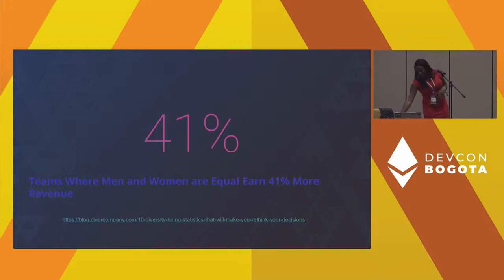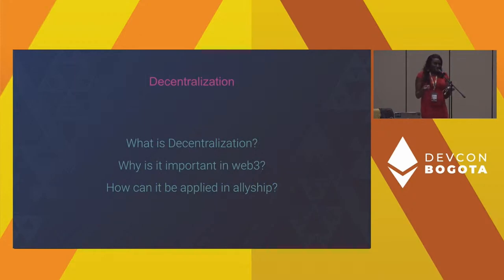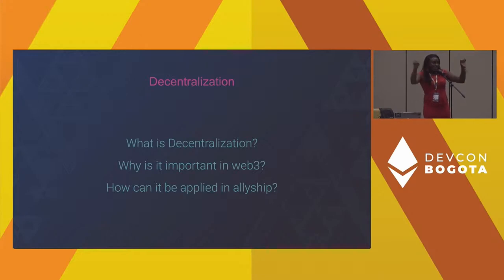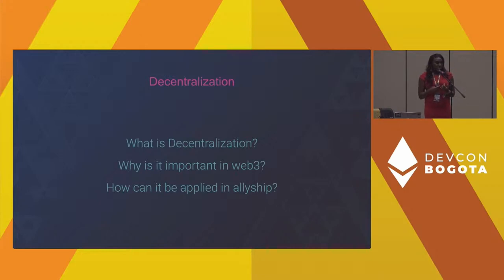The key reasons these are important to Web3 come from the actual ethos of Web3. When you think of decentralization, identity, and plurality — we always talk about these from a technical perspective, but they also apply from a human perspective. When we think of decentralization, we talk about decentralizing nodes, but if you're creating systems and procedures you also want decentralization of thought.